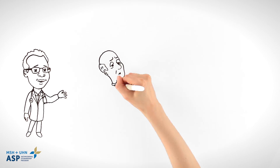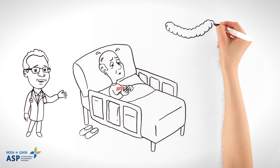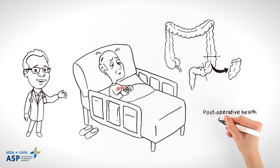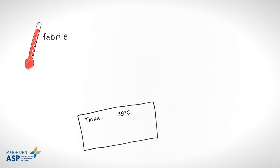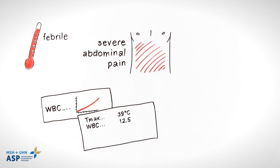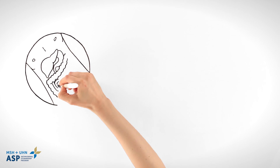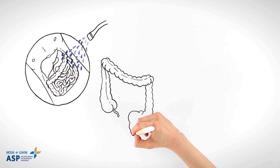Patient CM, an elderly male with colon cancer, had a bowel resection surgery. Post-operatively, he gradually deteriorated. Today, he was febrile, had severe abdominal pain, his white count was elevated, and he looked very sick. CM went back to the OR for a washout and repair of an anastomotic leak.